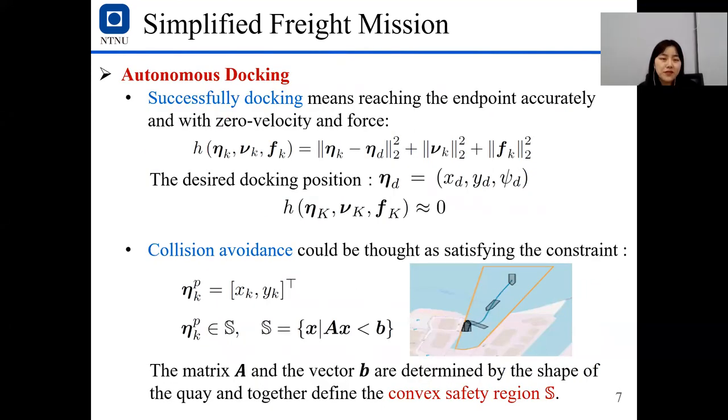For the autonomous docking, successfully docking means that the ship reaching the endpoint accurately with zero velocity and force. So it means that at the terminal time k, this h should be near or equal to zero. It means it should be docking accurately with zero velocity and zero force. When we do docking, we also need to avoid collision between the ship and the quay. So it could be thought as satisfying this constraint. It means that the pose of the ship should be within this safety region defined by these equations, whereas the matrix A and the vector B are determined by the shape of the quay and define the convex safety regions.